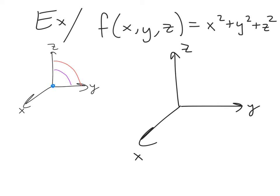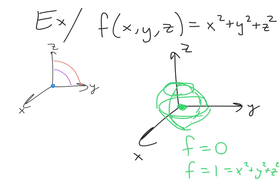Now, we draw level surfaces of the function. The level surface f is equal to 0 is just the point at the origin. The level surface f equals 1 is the sphere 1 is equal to x squared plus y squared plus z squared. This is a sphere that's radius 1 from the origin. And here's my attempt to draw a sphere. So this sphere is radius 1 from the origin.